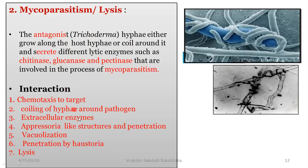Breaking down the mycoparasitism interaction into steps: Trichoderma grows towards the pathogen by the process of chemotaxis. Then coiling of the hyphae around the pathogen takes place. Extracellular enzymes — chitinase, glucanase and pectinase — are produced. Appressorium-like structures are produced to penetrate the pathogen. Penetration also happens by haustoria. Then vacuolarization of the pathogen takes place, and finally lysis of the pathogen occurs.